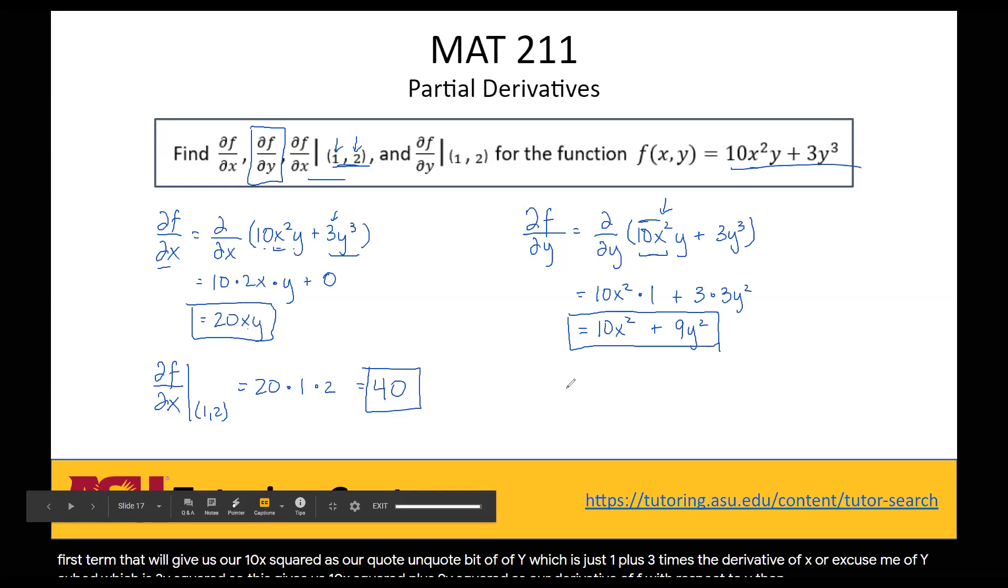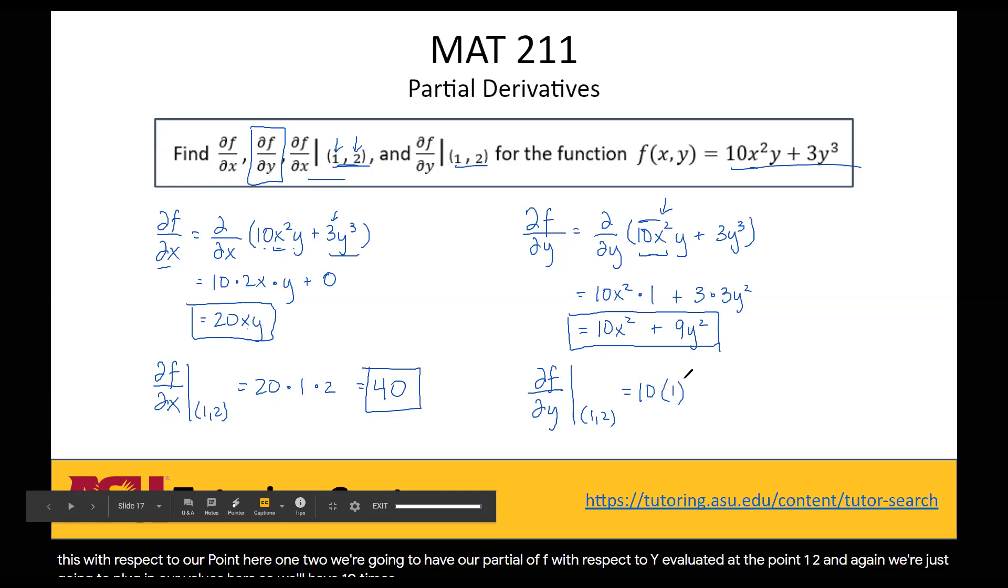So then if we want to evaluate this with respect to our point here (1,2), we're going to have our partial of f with respect to y evaluated at the point (1,2). And again, we're just going to plug in our values here. So we'll have 10 times 1 squared plus 9 times 2 squared. And if we work this out, that gives us 10 here on the left, plus this will be 9 times 4, so 36. So we end up with 46.